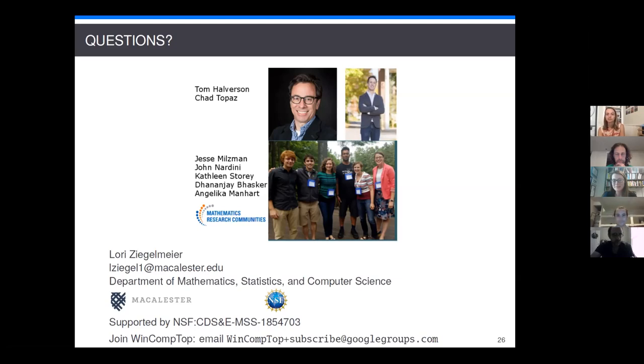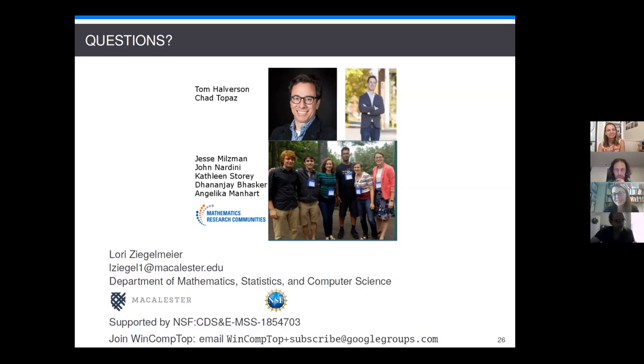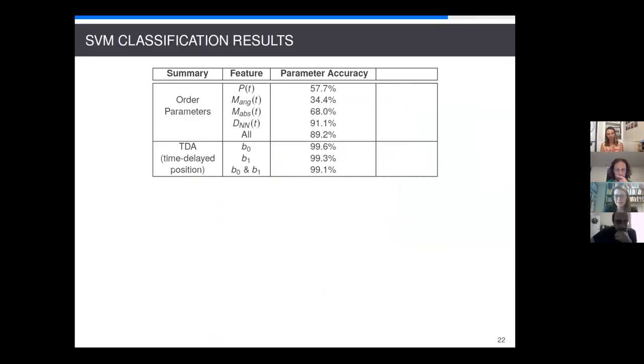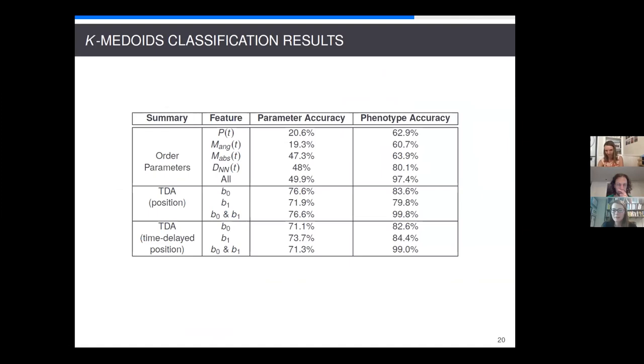I have a few questions in my chat. The first one's from Ambrose. So maybe Ambrose can go ahead and unmute and ask his question. Hi, Laurie. Thanks for a fantastic talk and these are very interesting results. I just want to go to slide 20. I think it's one of the tables of results and I seem to notice that for some cases that for parameter accuracy, having the betty ones, including betty ones and betty zeros doesn't seem to improve accuracy as much as you know, you see in the phenotype accuracy. Do you have any intuition why that is the case?